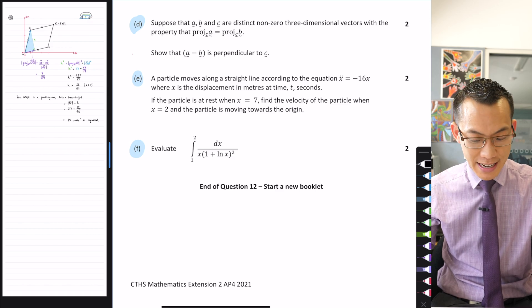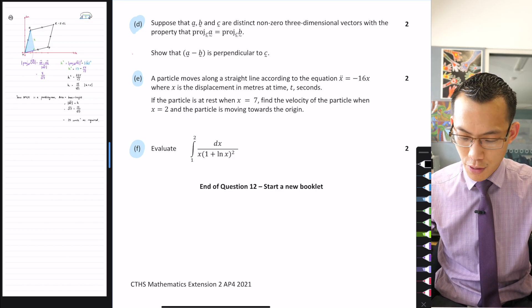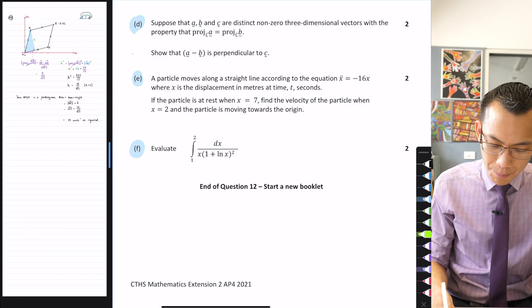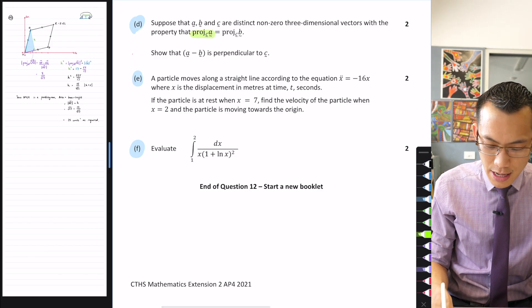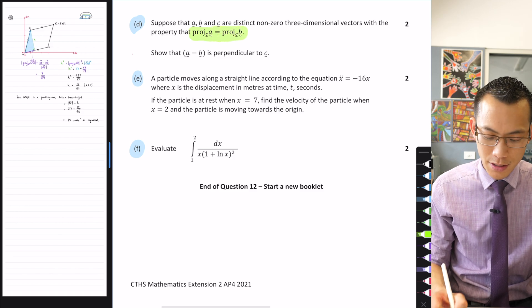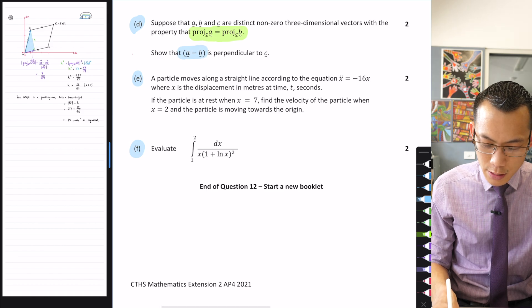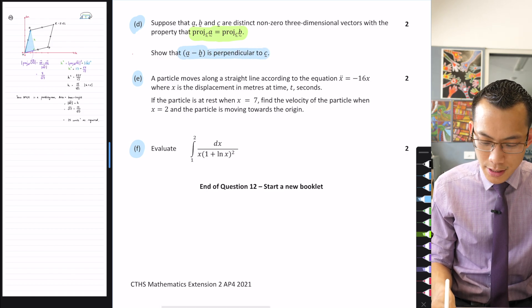Suppose that A, B, and C are distinct, non-zero, three-dimensional vectors with the property that the projection of A onto C is equal to the projection of B onto C. Show that A minus B is perpendicular to C.